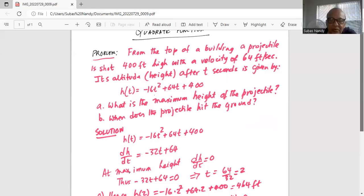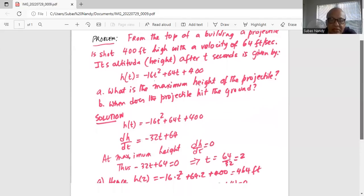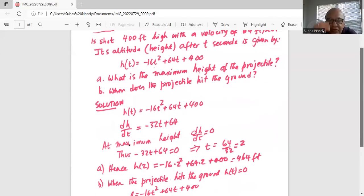At maximum height, dh by dt equals 0, thus minus 32t plus 64 equals 0, from which we solve for t equals 64 divided by 32, which is 2 seconds. So after 2 seconds, it will reach the maximum height.